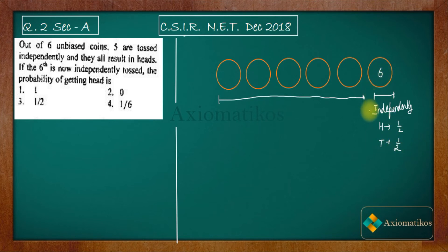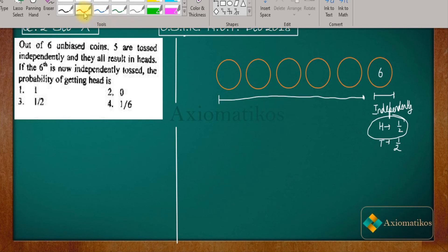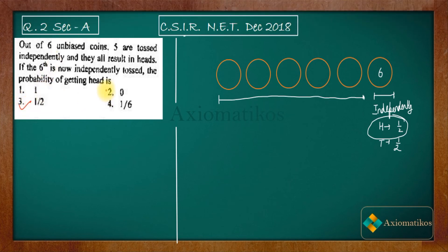So that is why the probability will still be 1/2 because you are doing it independently. You don't have to think about the remaining five coins. So the answer for this problem will be three. It is a very easy problem if you try to understand it.